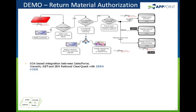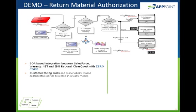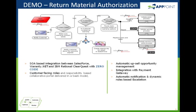The RMA process starts with a customer calling one of the several support centers across the globe. Upon validation of basic information, the customer is provided with a case ID which is registered in the CRM solution hosted by Salesforce.com. Using this case ID, the customer can log into a self-service RMA portal to initiate the actual return process.